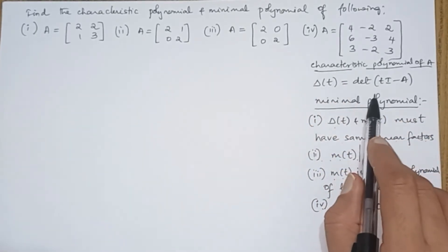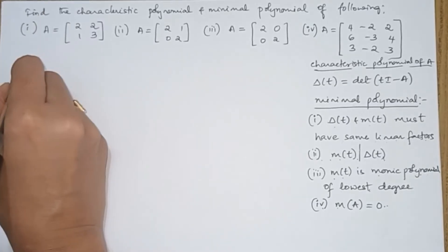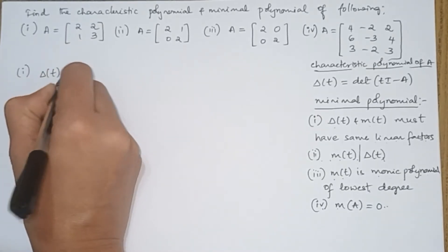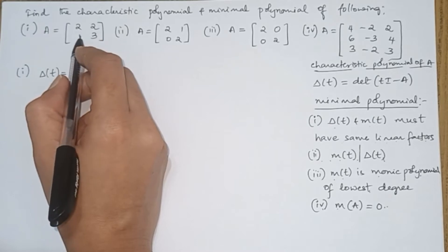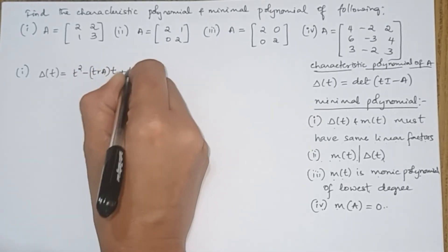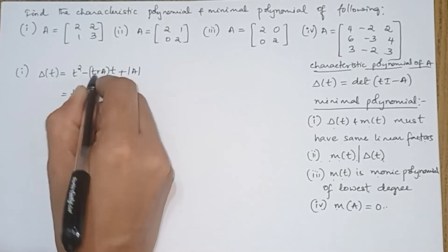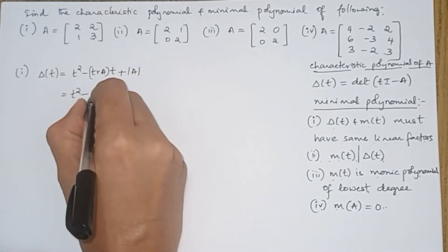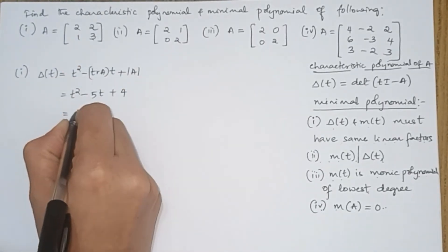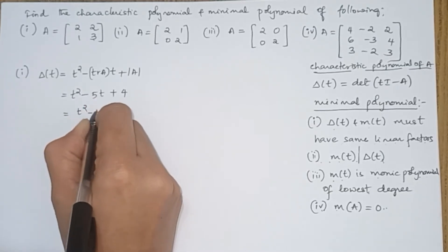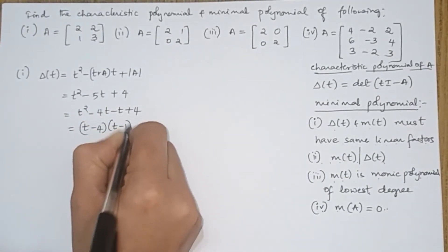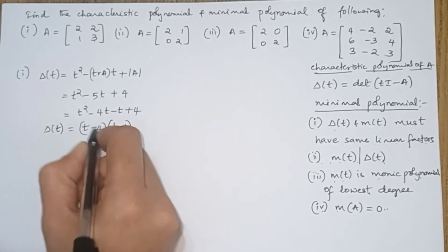Keep these points in mind while solving the problems. For the first problem, the characteristic polynomial delta(T) for a 2×2 matrix is T² minus trace(A)·T plus determinant(A). The trace is 2 plus 3 equals 5, so we have T² minus 5T plus 4. The determinant is 3×2 minus 2 equals 4. Factorizing: T² minus 4T minus T plus 4 gives (T minus 4)(T minus 1). This is the characteristic polynomial.